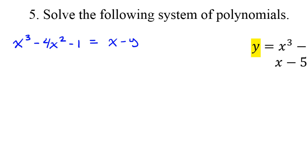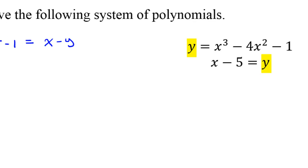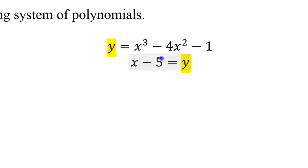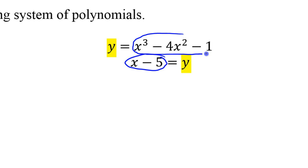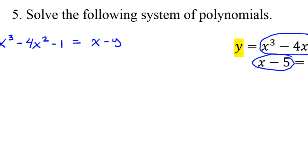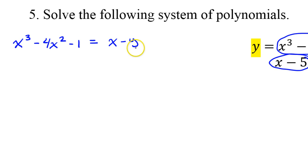So here I've taken the two equations — with the x minus five and the x to the third power minus four x squared minus one — and I've set them equal to each other. Wait, I put x minus y; that should be x minus five.